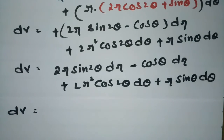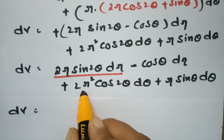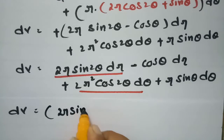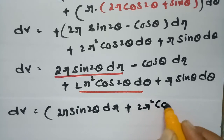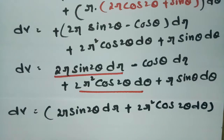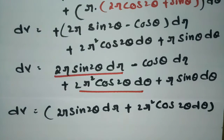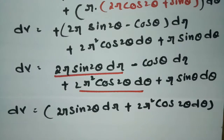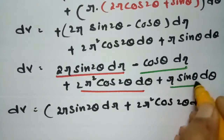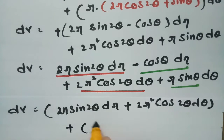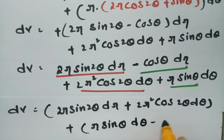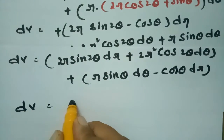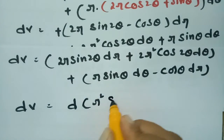Now grouping terms: I write (2r sin2θ dr + 2r² cos2θ dθ) together, and (r sinθ dθ - cosθ dr) together. The first group is the derivative of r² sin2θ, and the second group is the derivative of r sinθ... actually the derivative of -r cosθ.